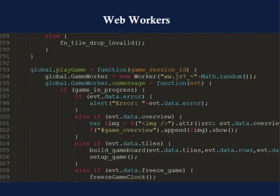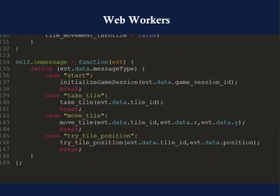On slide 33, to create the worker, on line 294 in www.js, we simply call new Worker — that loads that file into a separate thread and establishes communication between the two. Inside the web worker on slide 34, we call self.onMessage to listen for events — the start event, take tile, and so forth.